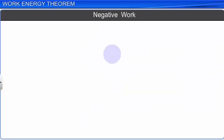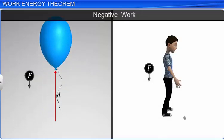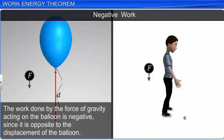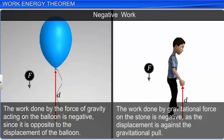The work done by a force is negative when the angle between force and displacement is obtuse, that is, greater than 90° and less than or equal to 180°. In the case of a rising balloon, the work done by the force of gravity acting on the balloon is negative, since it is opposite to the displacement of the balloon. In the example of a boy lifting a stone, the work done by the gravitational force on the stone is negative, as the displacement is against the gravitational pull.